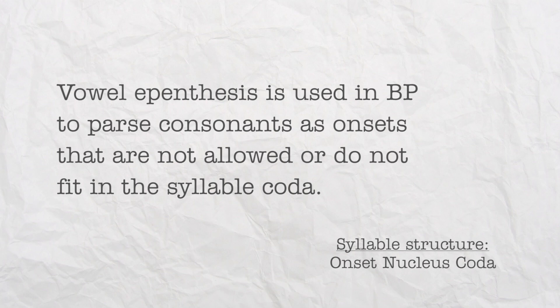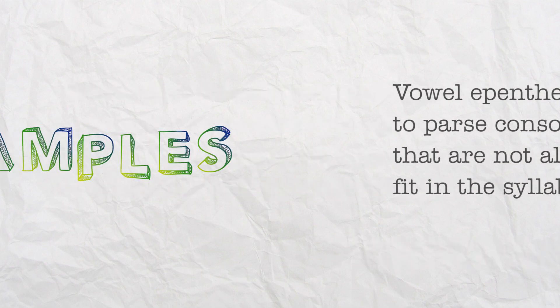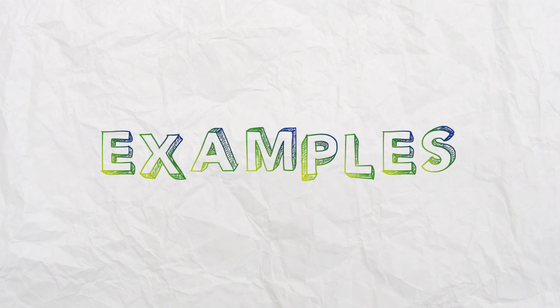Every syllable has three parts: onset, nucleus, and coda. The onset is the beginning and the coda is the end. Here we see consonants in the onset or in the coda. Let's look at these examples individually.